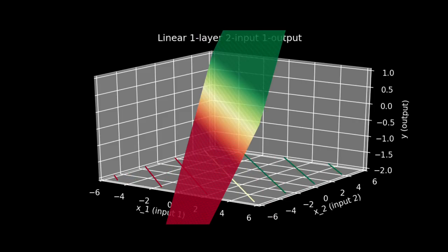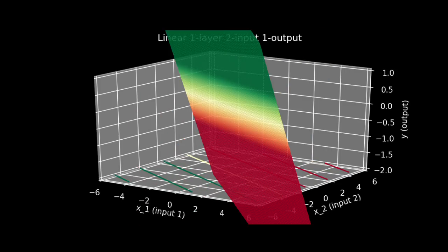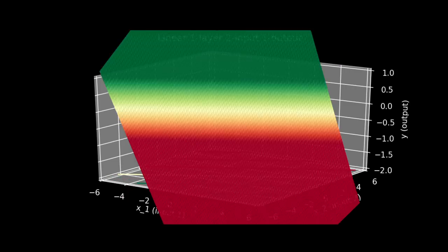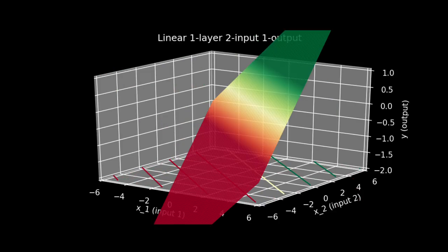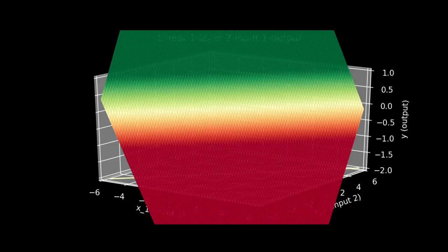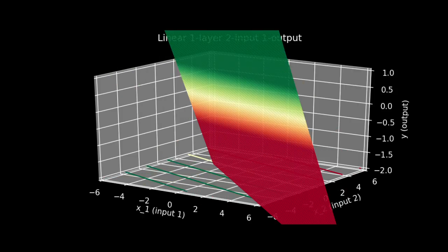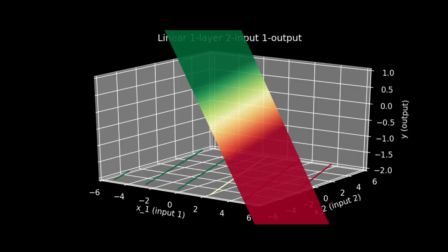For this three-dimensional case, we can again look at the models that emerge when we randomly choose our W sub i,0s, our weights. As we would expect, we still get the three-dimensional equivalent of a line, a plane in this case. And if we were to extend this to more inputs, we would get the M-dimensional equivalent of a line, which is called an M-dimensional hyperplane.